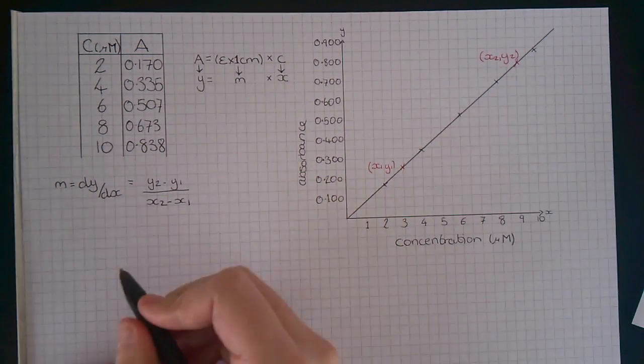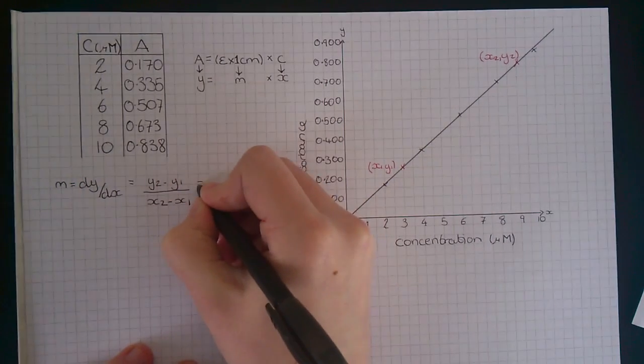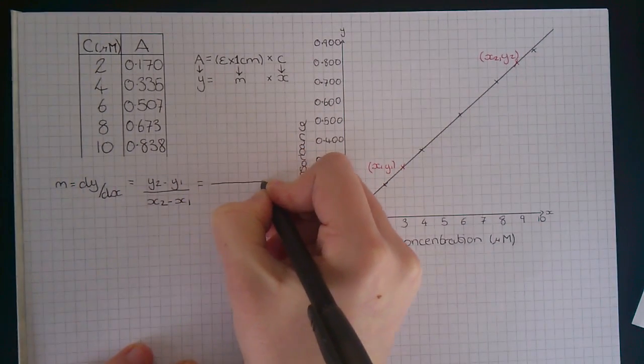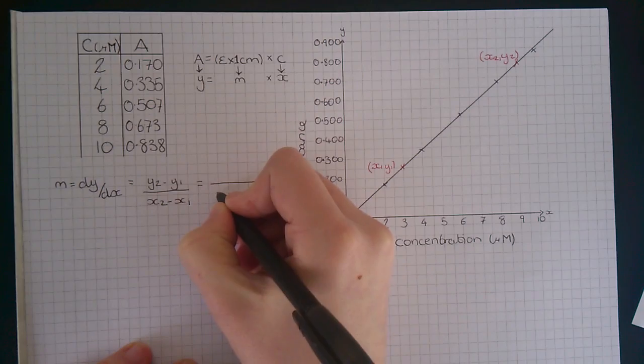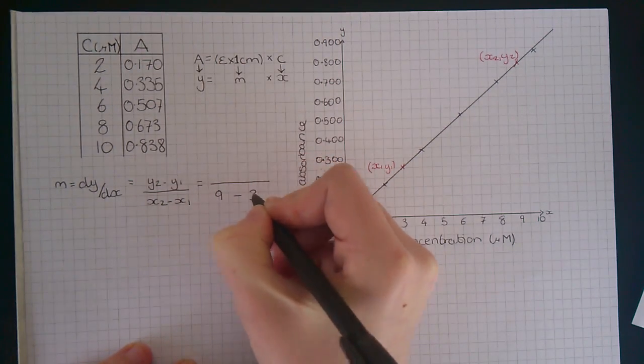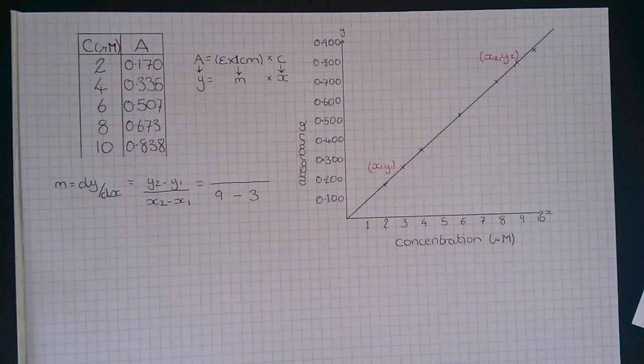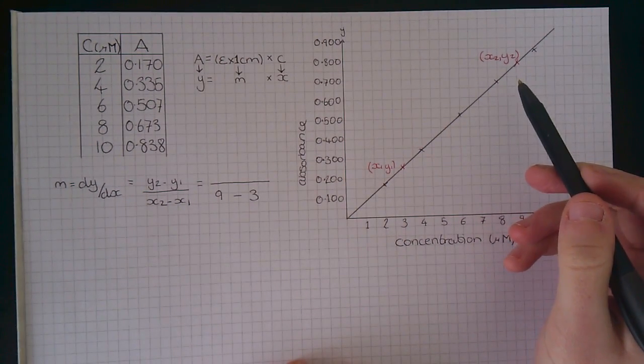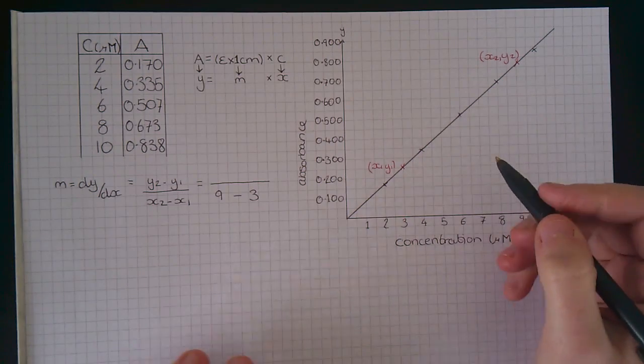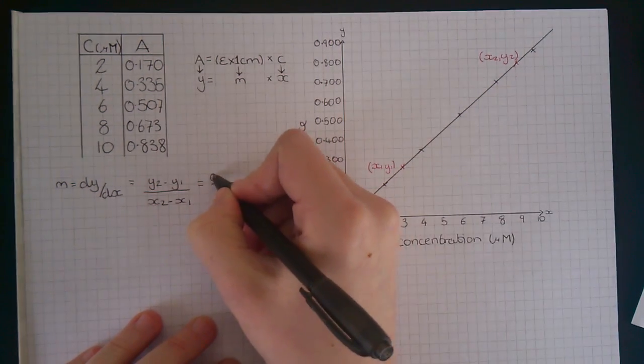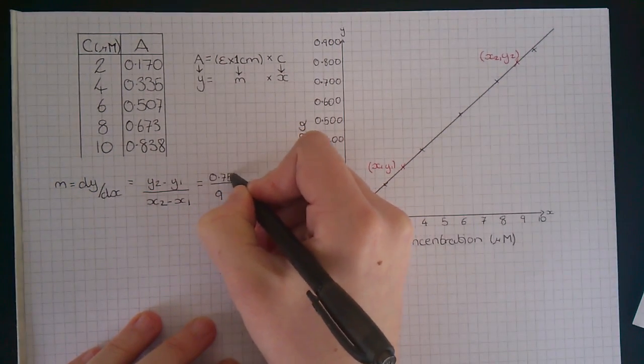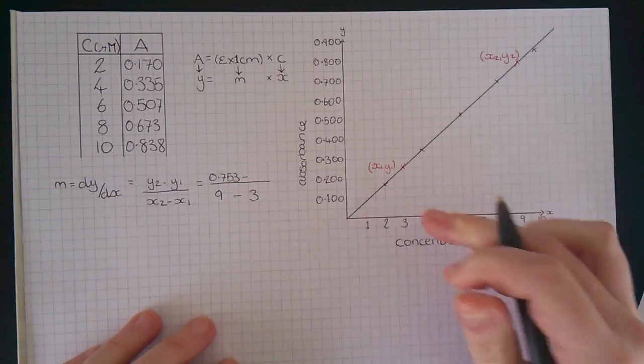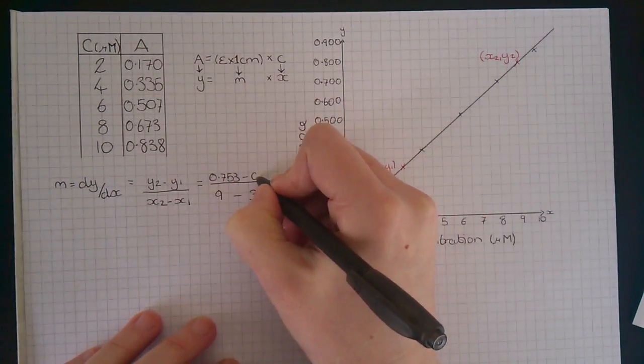So now we need to put those numbers into our equation. It's hard to see from the scale of this graph, but when x is 9, y is 0.753. And when x is 3, y is 0.253.